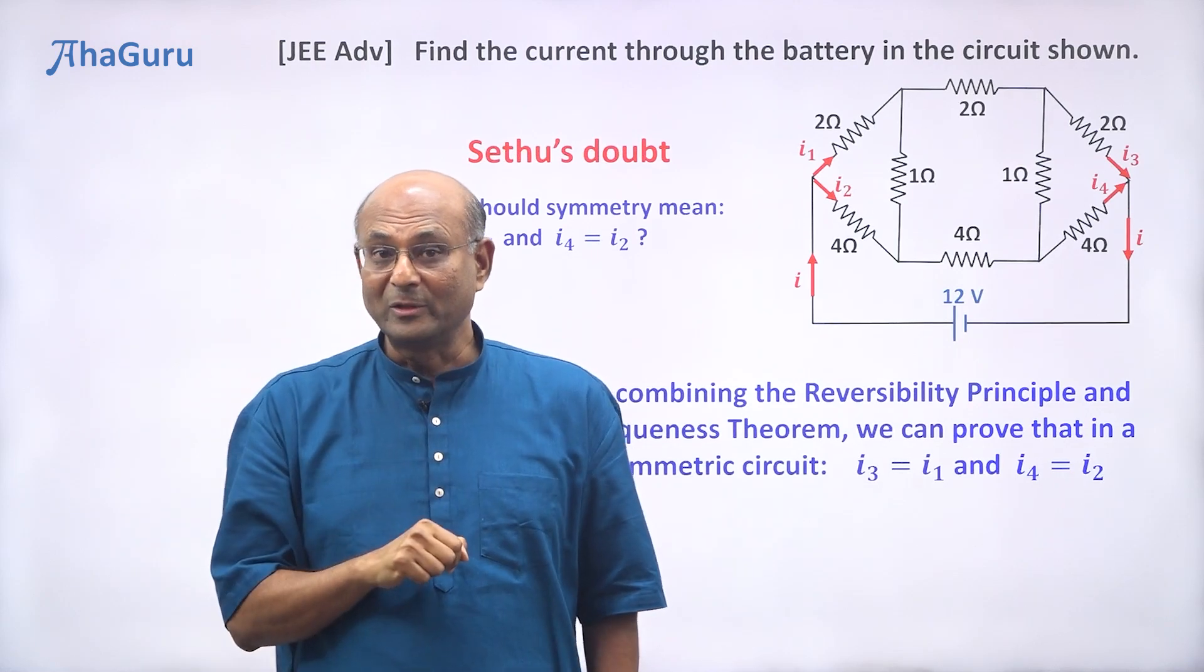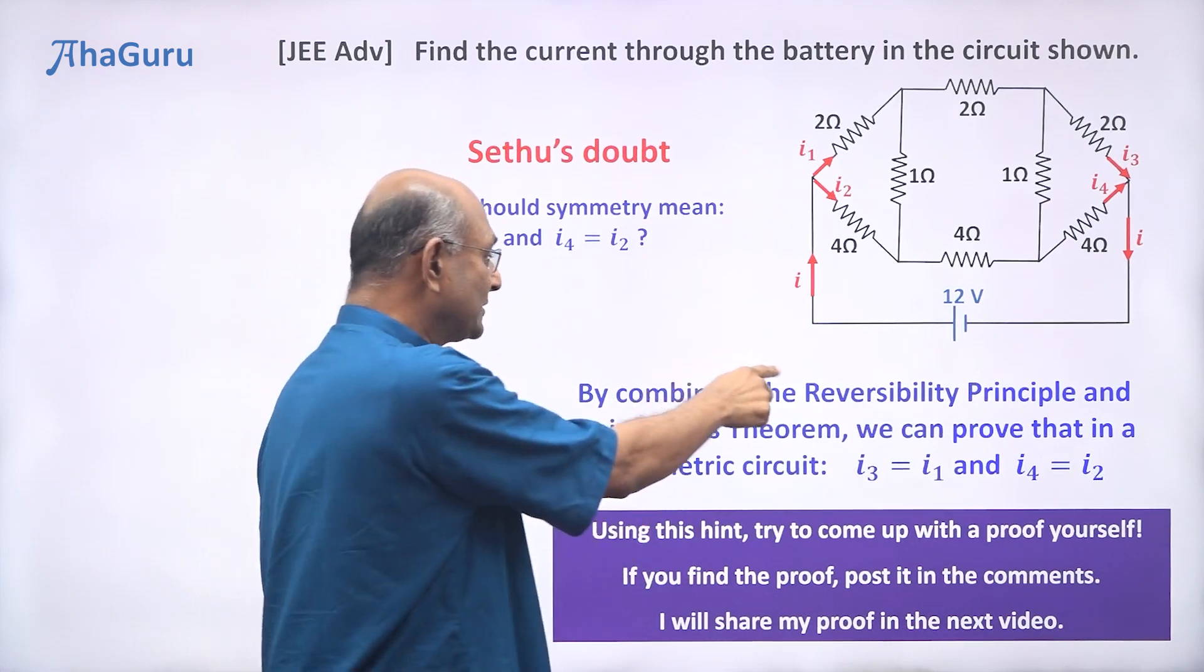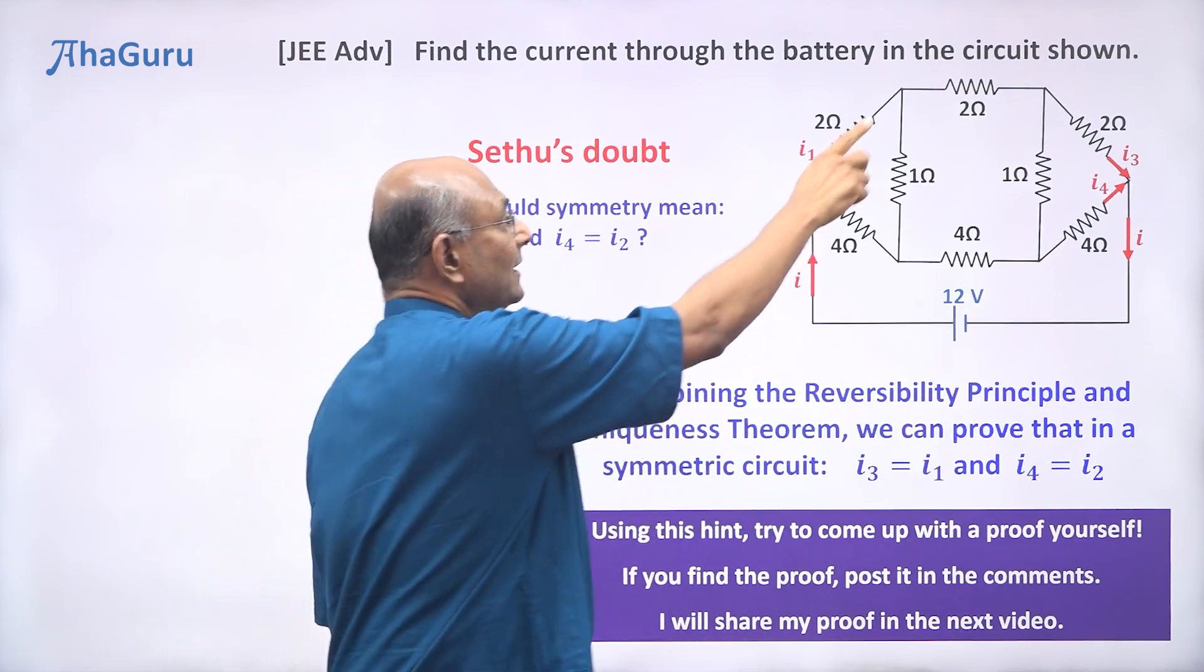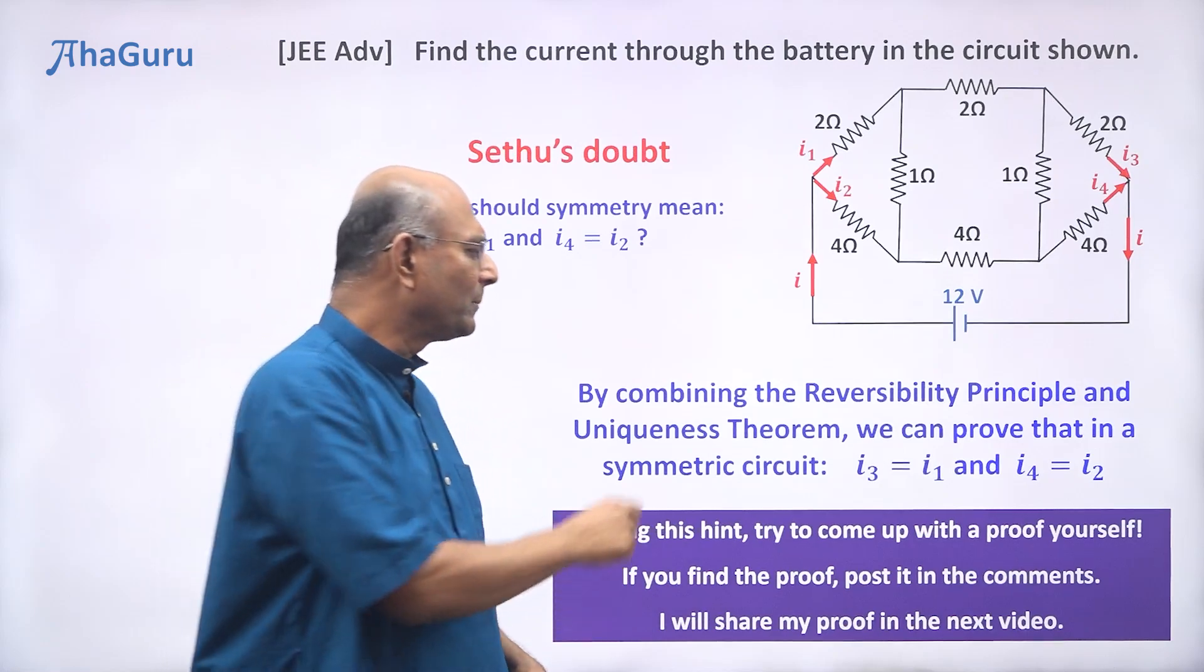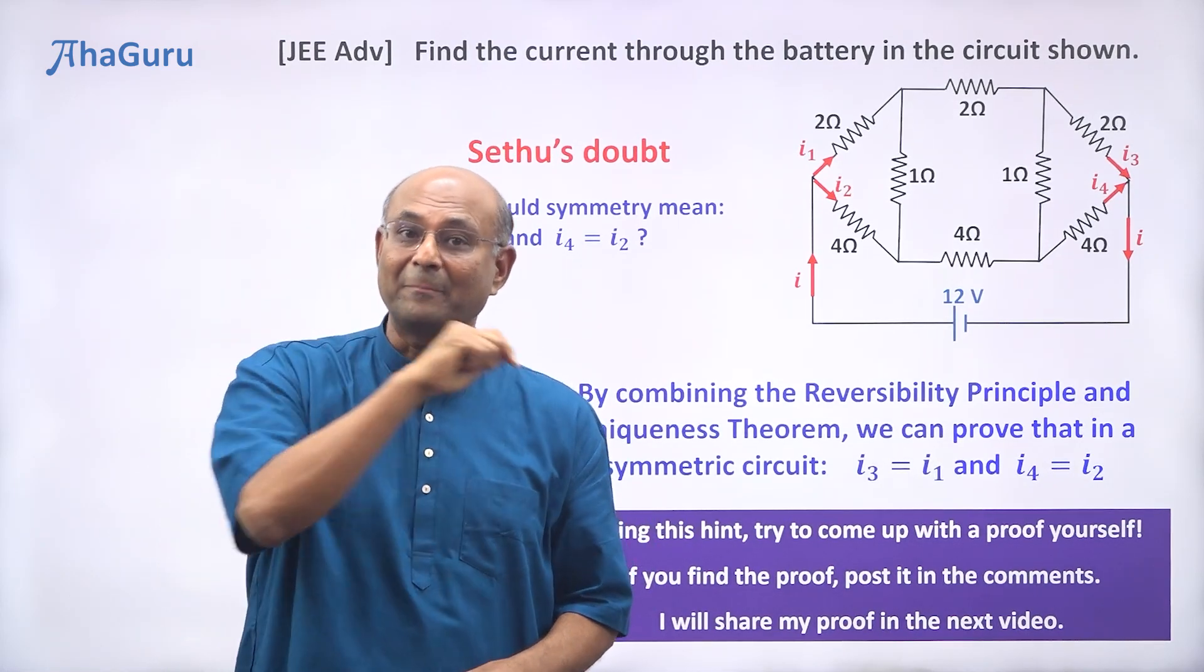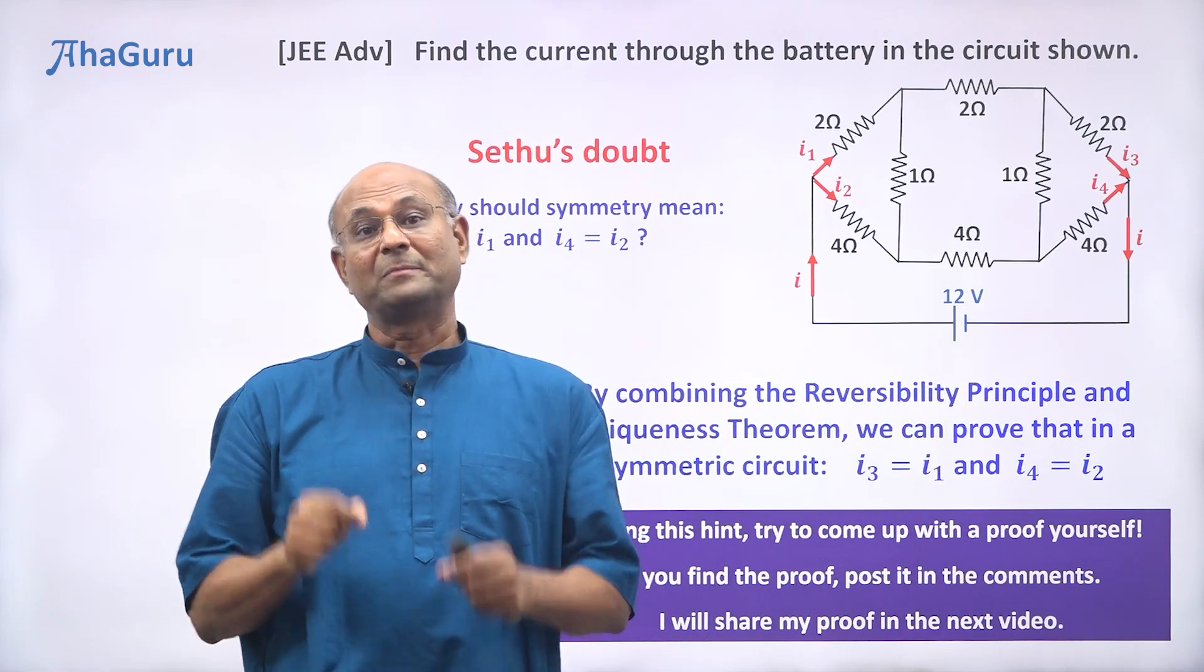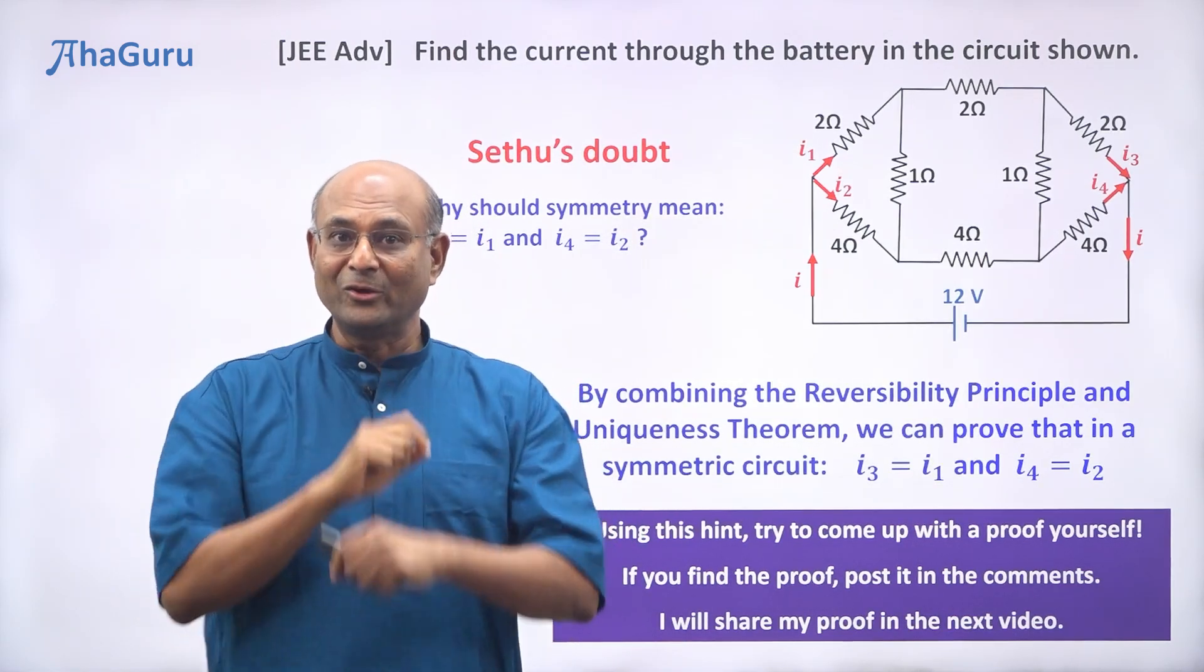I am not going to give you the proof right now. Try to use this hint. I have given you a hint. You must use the reversibility principle and the uniqueness theorem. You can show that for a symmetric circuit, this means that I3 must be equal to I1 and I4 must be equal to I2. Try to do the proof yourself. If you come up with a proof, please post it in the comment section below. I will take a look at it. And next week, I am going to post a video with my proof. So, see you all next week for the video there.